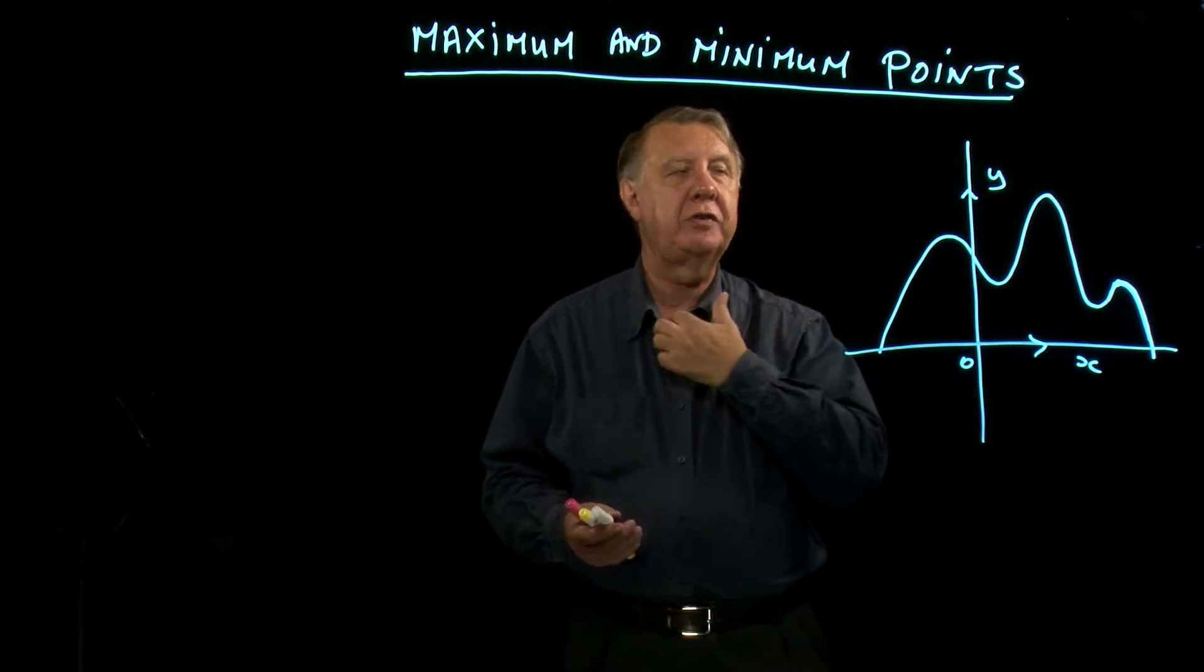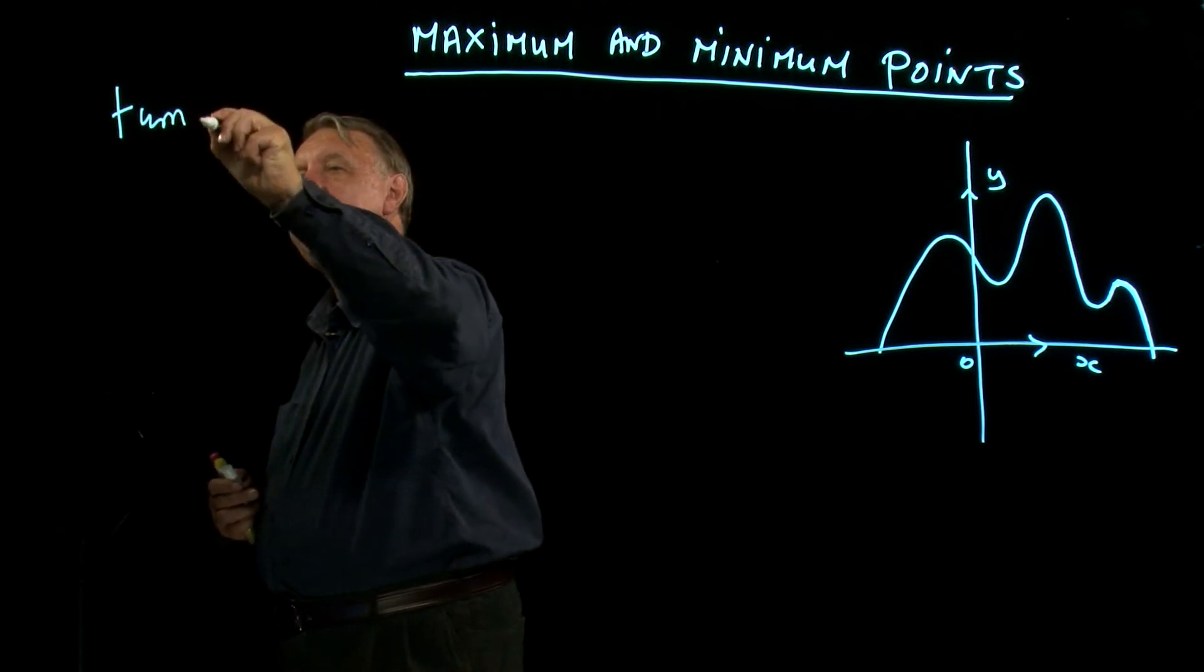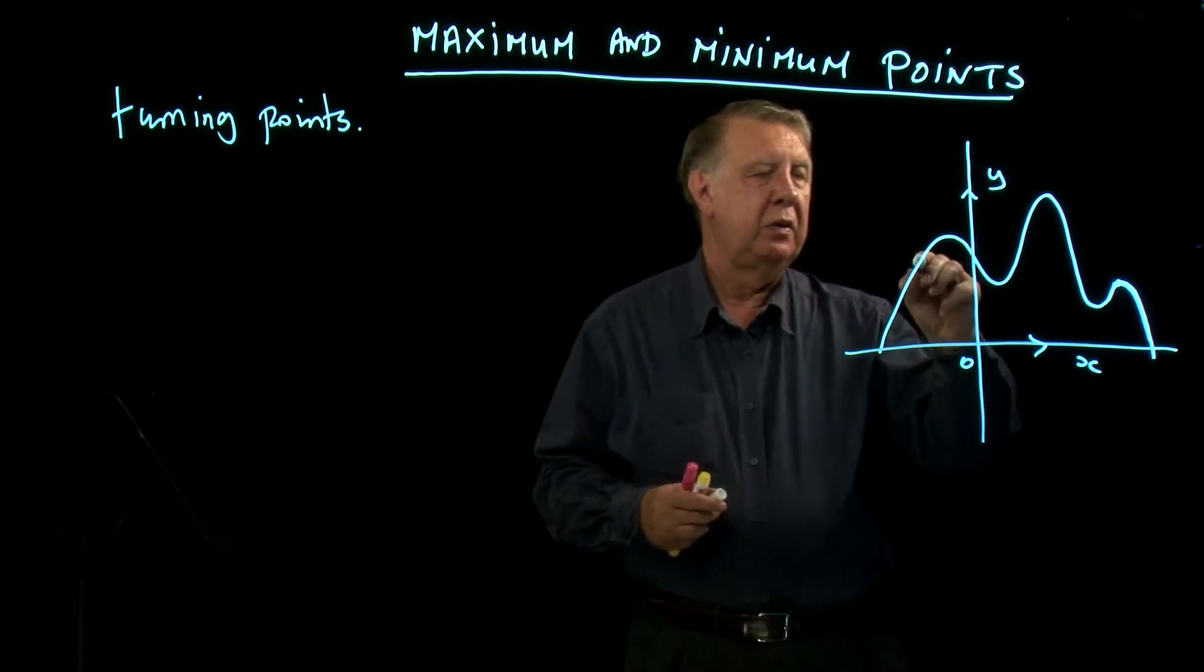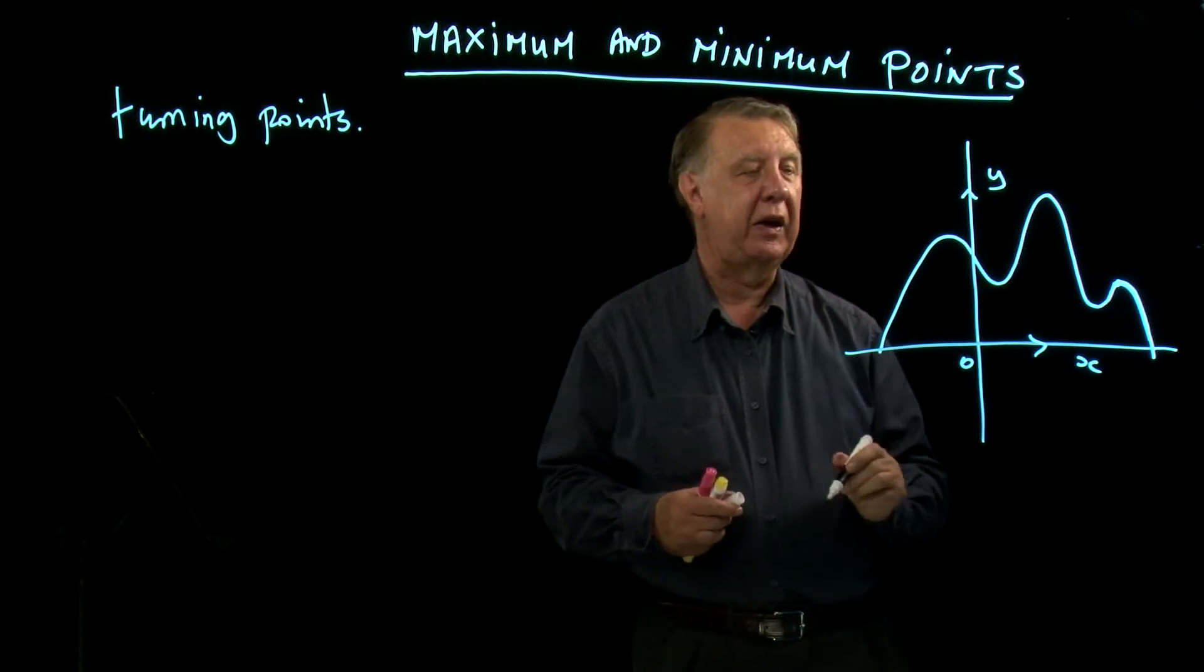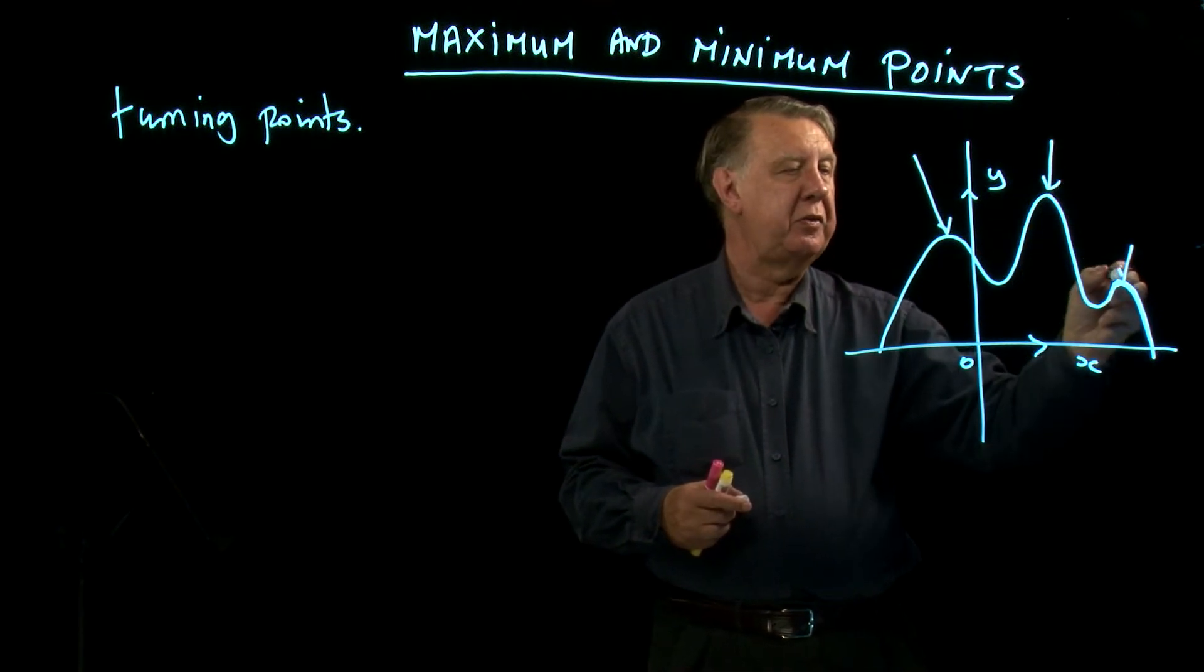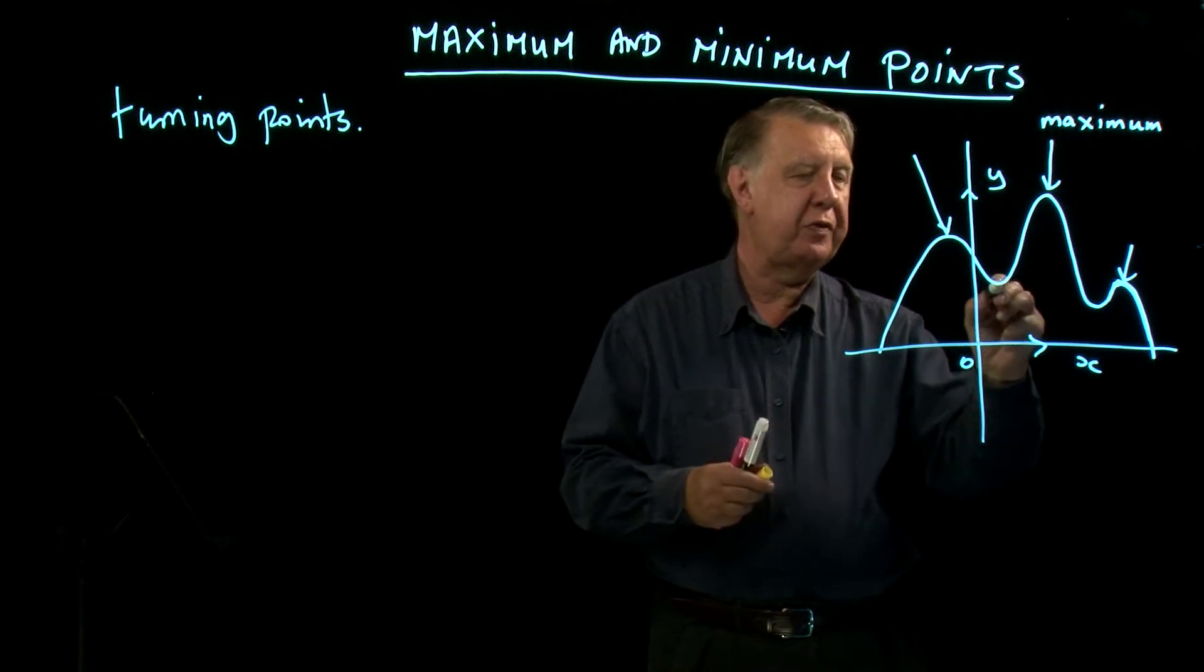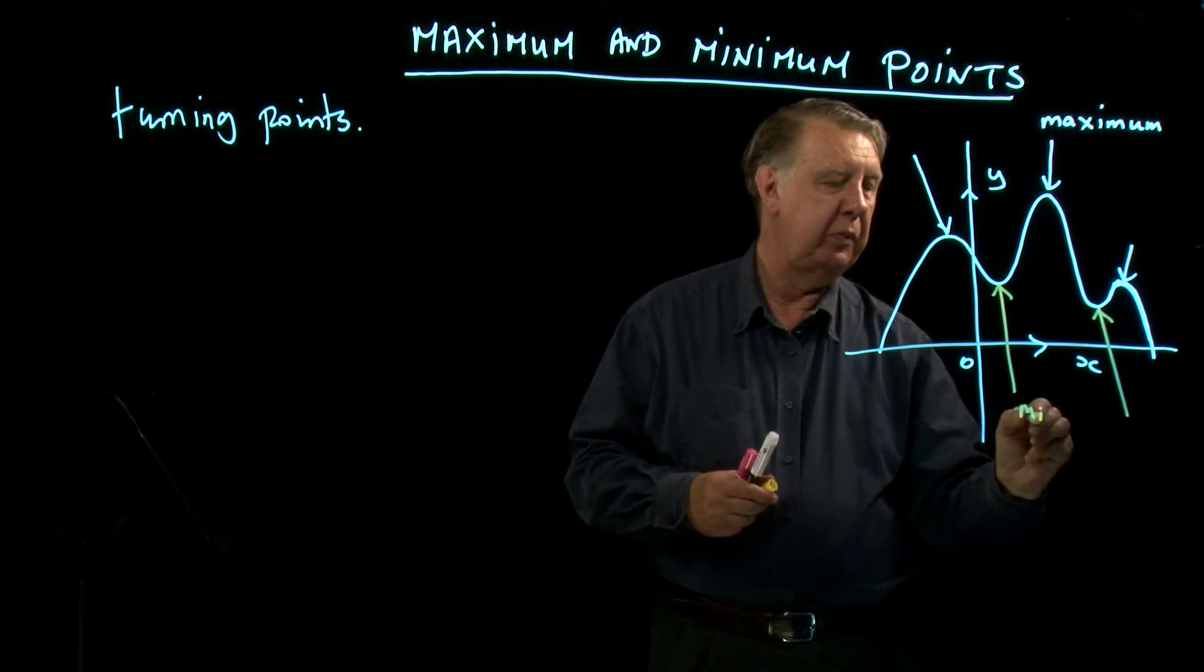These are often referred to as turning points. Let's think of the phrases that crop up here. We certainly will meet the phrase turning points, and they turn in a couple of ways: they either get to a point and go down, or they get to another point and then go back up again. These peaks, if you like, are referred to as maximum points, and the lower parts, the troughs, are often referred to as minimum points.